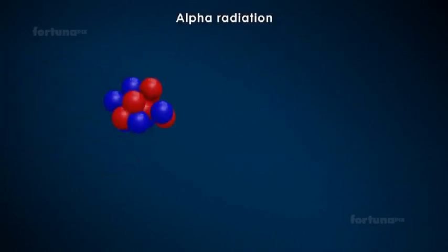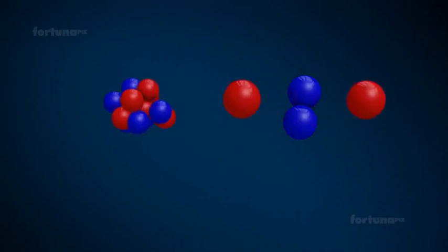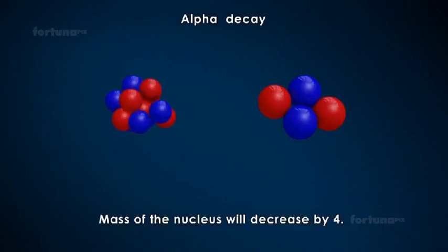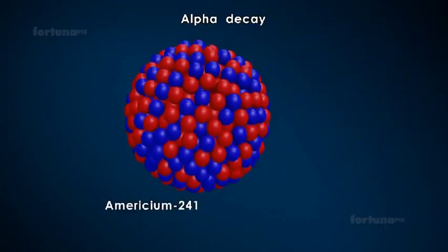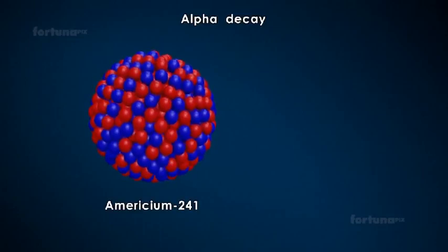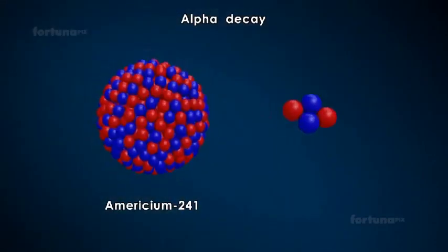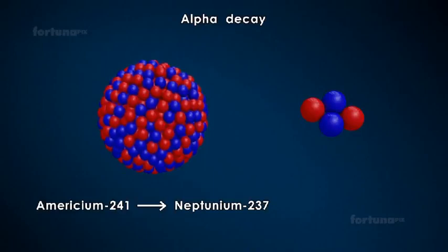In alpha radiation, an alpha particle comprised of two protons and two neutrons will be released. During alpha decay, the mass of the nucleus will decrease by 4 and the atomic number of the atom will decrease by 2. Americium-241, for example, will undergo alpha decay and form neptunium-237.